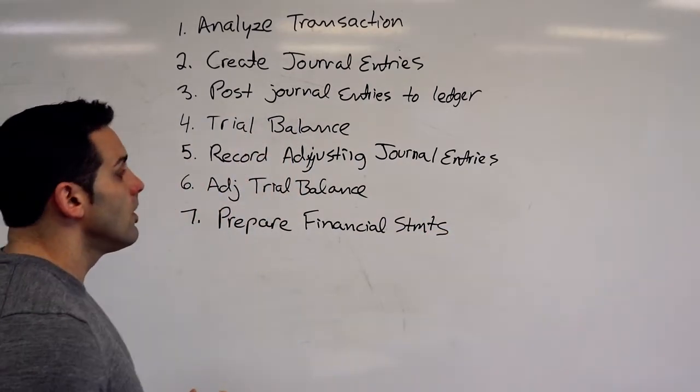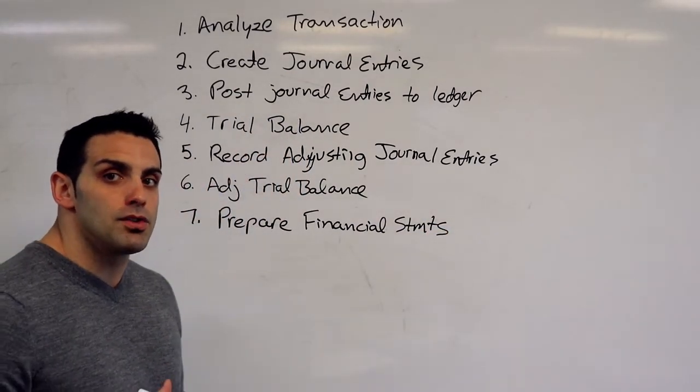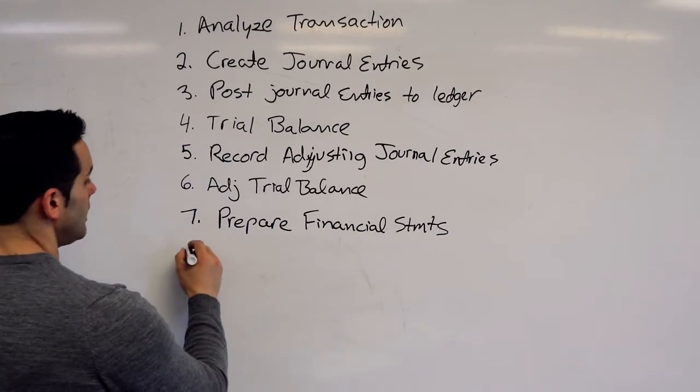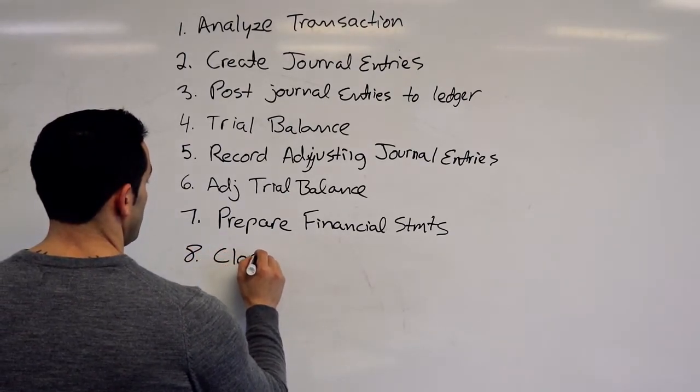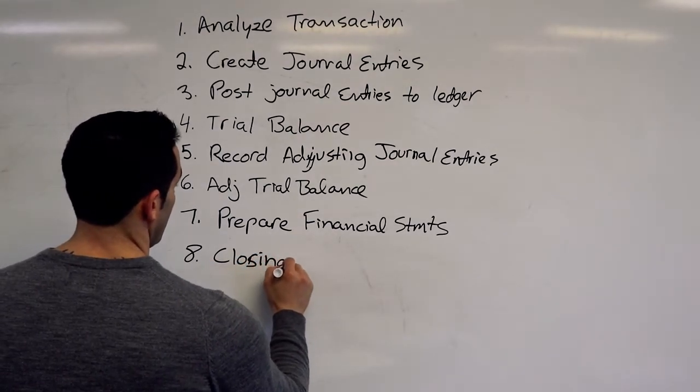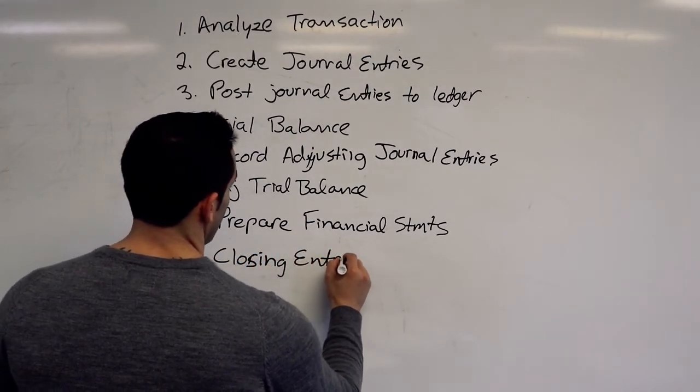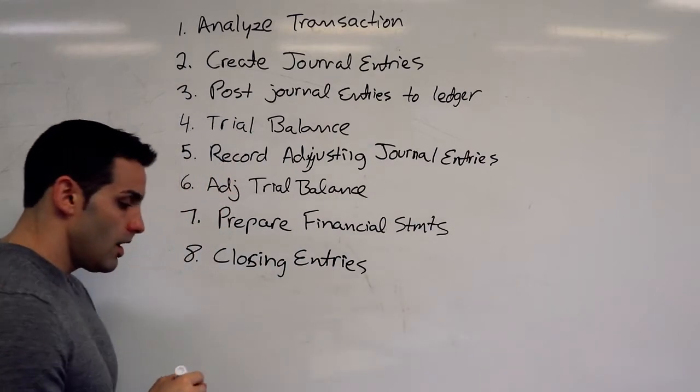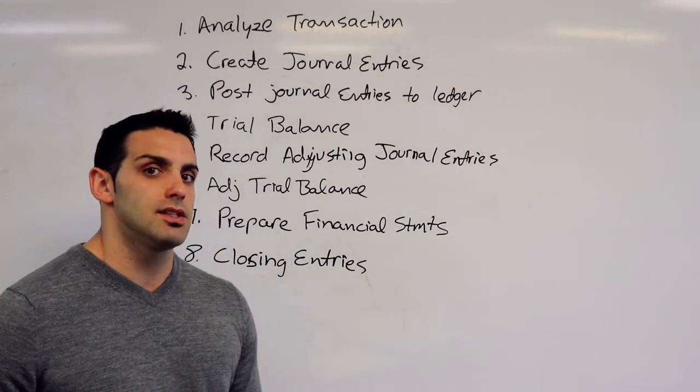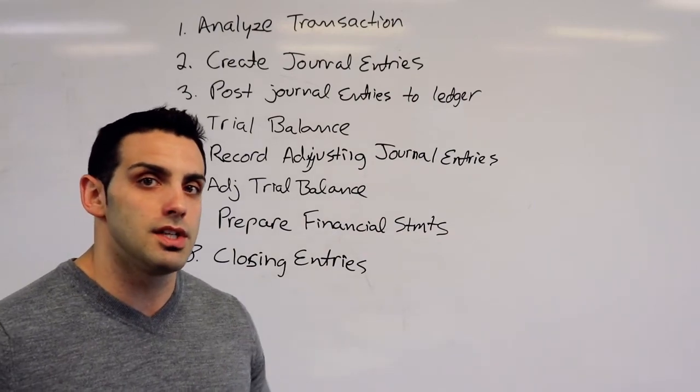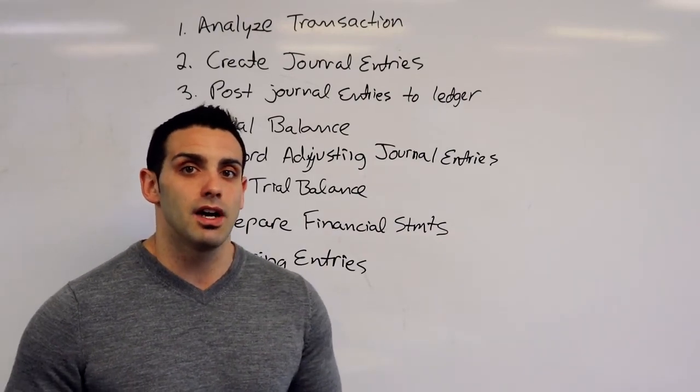Now that's technically not the last step. There is one more after this and that is prepare our closing entries. And this is going to be where we close out our temporary accounts. So our revenues, our expenses, our dividends are going to be closed into retained earnings and closed out for that period.